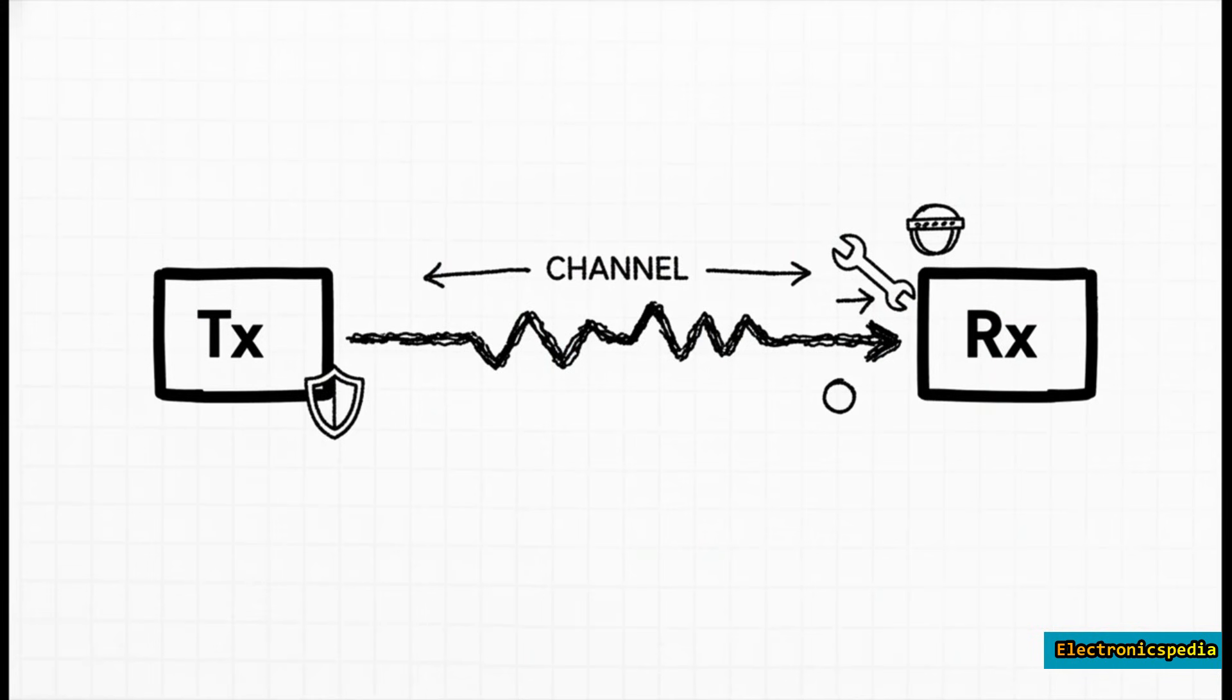This isn't just one device doing all the heavy lifting. It's a cooperative effort, a two-way conversation. You've got the transmitter, or TX, which sends the signal and preps it for the tough journey ahead. Then you have the receiver, or RX, which works to clean up and reconstruct whatever got messed up along the way.